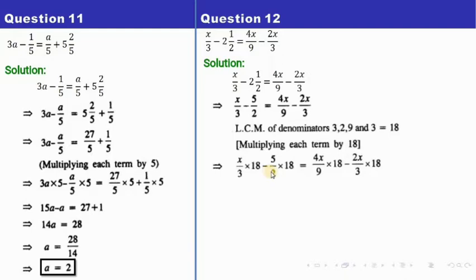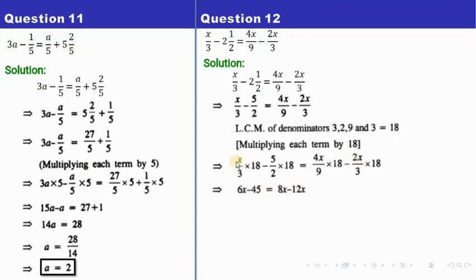Similarly, 2 and 18 cancel giving 9, so 9 times 5 is 45. Similarly 9 and 18 cancel giving 2, so 2 times 4 is 8 — this becomes 8x. And 3 and 18 cancel 6 times, giving 12x. So altogether we have 6x, 45, 8x, and 12x.